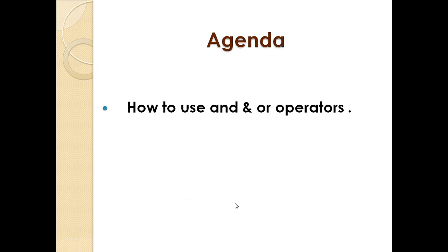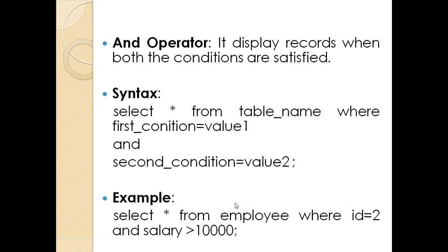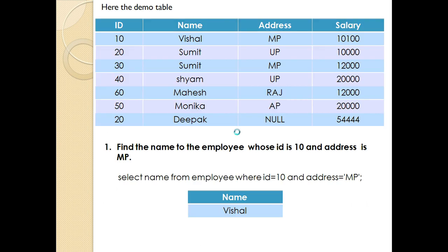Hello friends, welcome to my next tutorial on how to use the AND and OR operators. First of all, what is an operator? Basically, an operator displays records when both the conditions are satisfied. As the syntax says: SELECT * FROM table_name WHERE first_condition = value1 AND second_condition = value1. The AND operator will only work when both conditions are satisfied; if even one condition is not satisfied, the record will not be displayed.